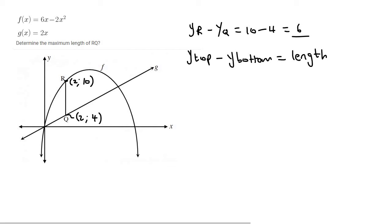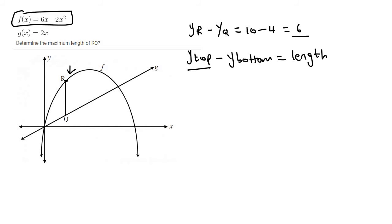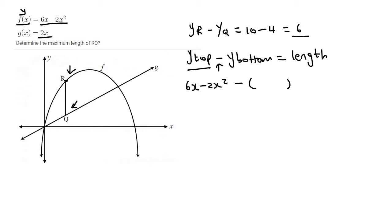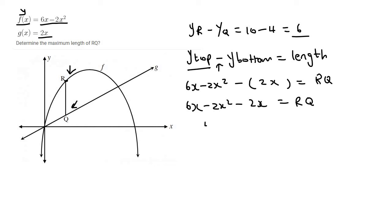Now, all that you do is — unfortunately, we don't have any coordinates. So what we do is we say y-top, which is the y-value of R from its equation. This f(x) part is a y, so y is equal to this. We replace y-top with 6x minus 2x squared, then minus in brackets y-bottom, which is its equation: 2x. We don't make that equal to 0, because then you're saying the length is 0 — you make it equal to the length, RQ. Simplifying gives us RQ = 4x minus 2x squared.